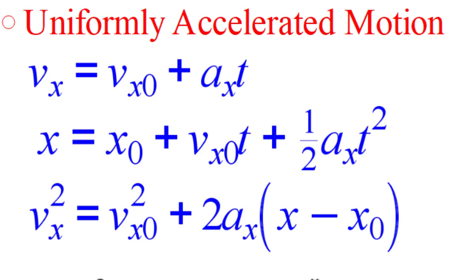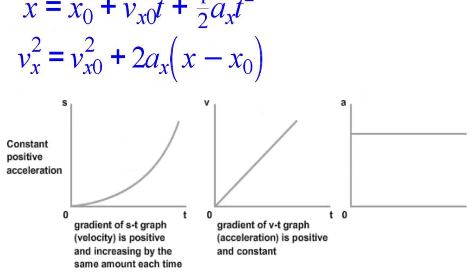The velocity final equals the velocity initial plus acceleration times time. We have displacement equals position initial plus velocity initial times time plus one-half at squared. And the last one is velocity final squared equals velocity initial squared plus 2a times the displacement. You can see on a position-time graph with constant acceleration, taking the derivative gives a linear velocity-time graph, and the derivative of that gives constant acceleration.